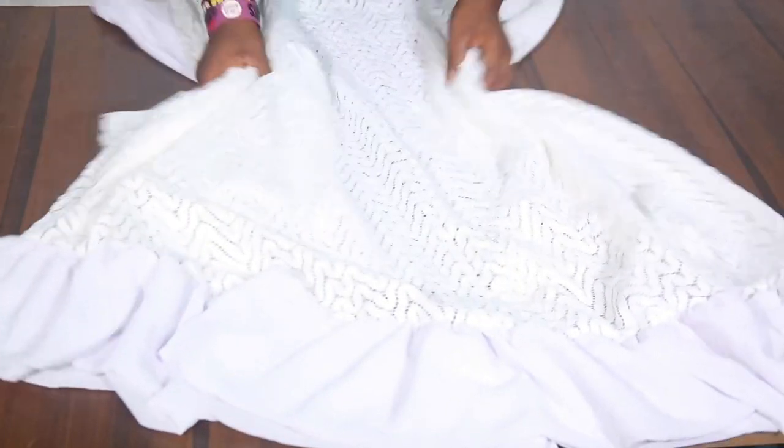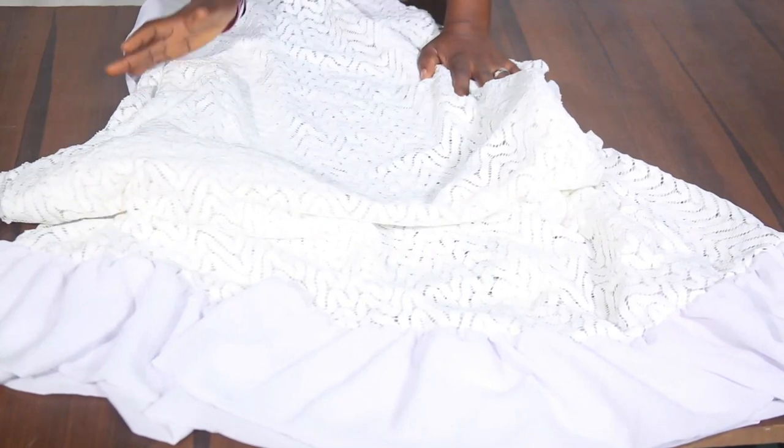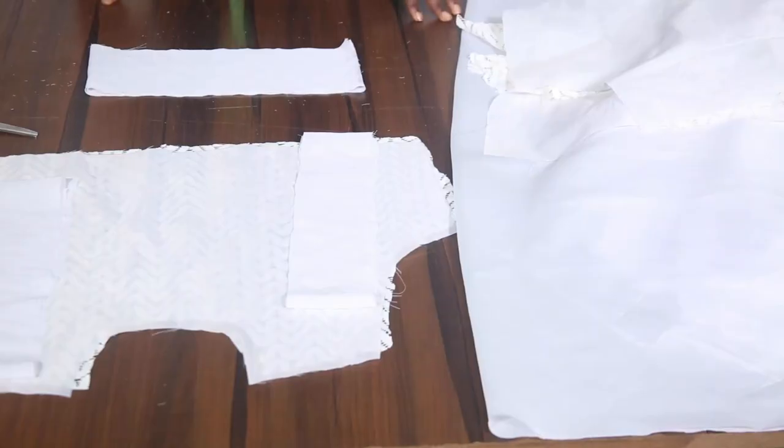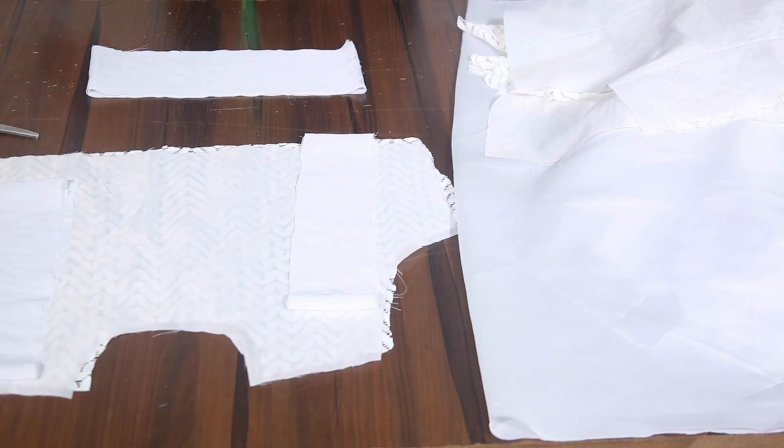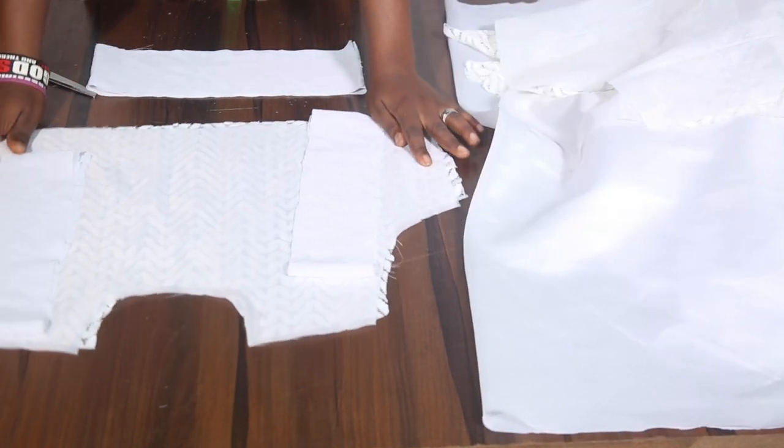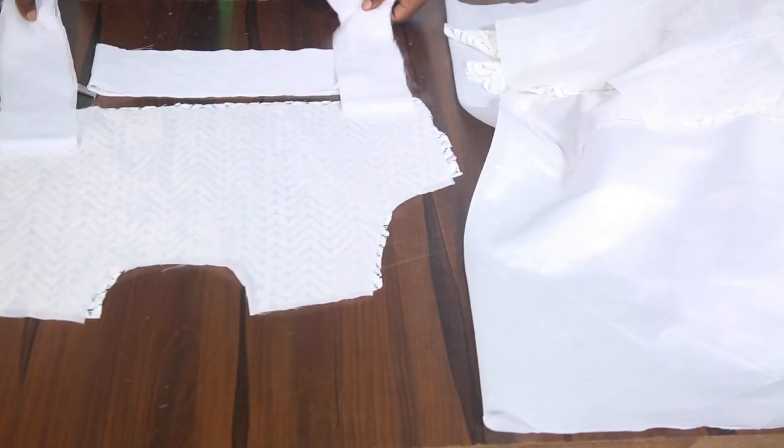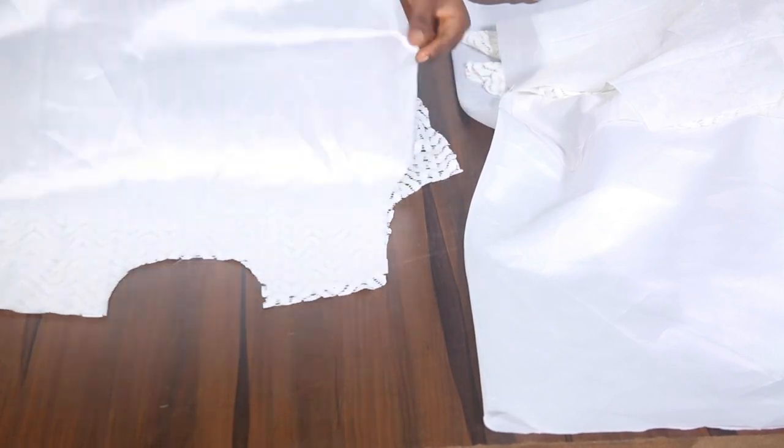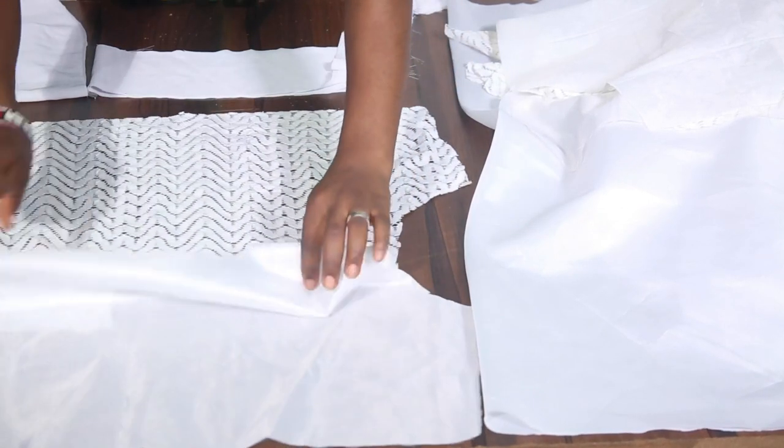Now we're going to be cutting out the rest of the chiffon. But before that let me quickly explain this. I have cut out my lining. So I'm going to turn the neck and I'll turn it in. I will also turn the sides.